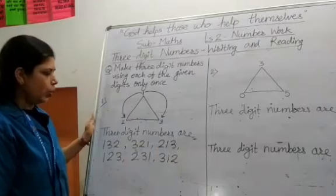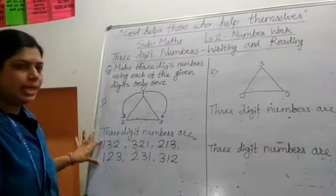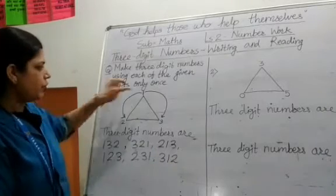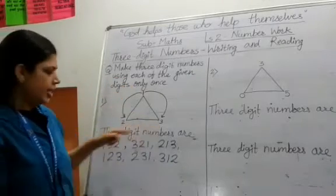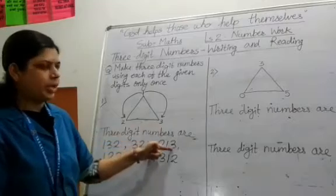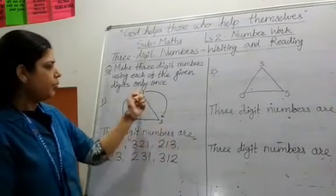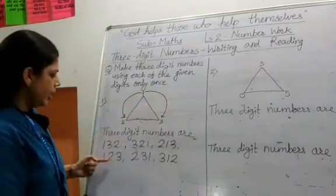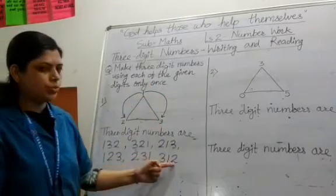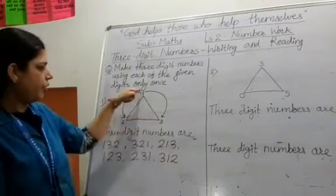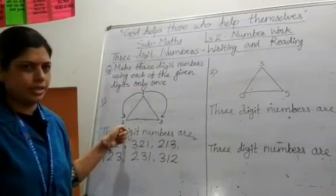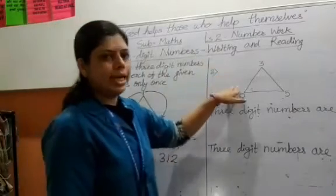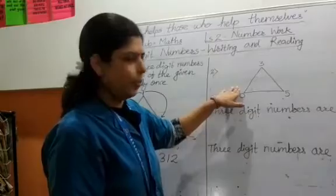Thus we get 6 three-digit numbers from 3 given digits. 3 numbers we get by moving in a clockwise direction and 3 numbers by moving in an anticlockwise direction. Now see the next example.